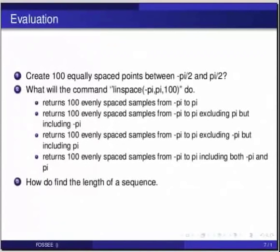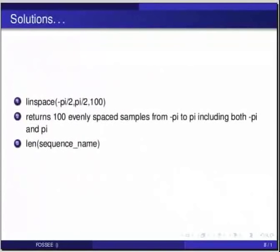Now, create 100 equally spaced points between minus pi by 2 and pi by 2. Second one, how do you clear a figure in IPython? The third one, how do we find the length of a sequence? And the answers are, one, we use the command linspace within brackets minus pi by 2 comma pi by 2 comma 100. To create 100 equally spaced lines between the points minus pi by 2 and pi by 2.